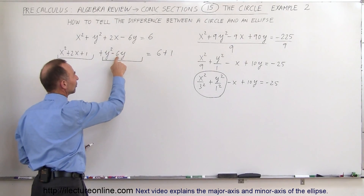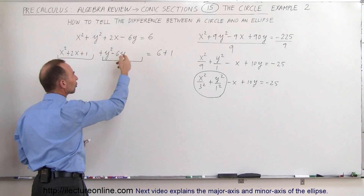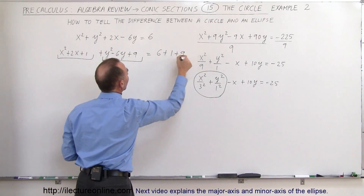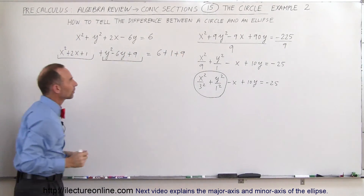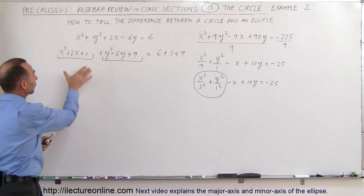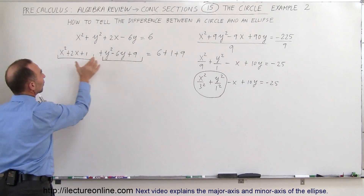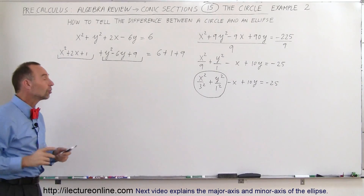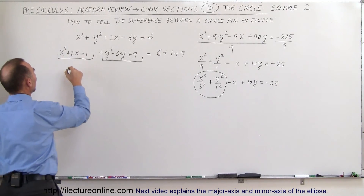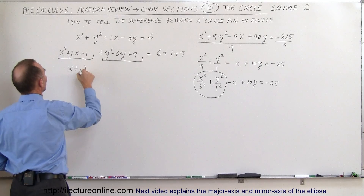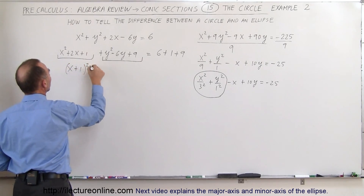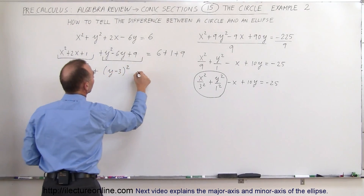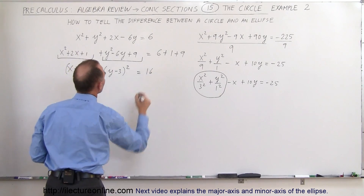Over here we take half this coefficient, which is negative 3, squared to get plus 9, and so we also need to add a plus 9 on the right side of the equation. Now we see that this is a perfect square and this is a perfect square, so we can write this as the square of a binomial. Here we can write this as (x + 1) squared plus (y − 3) squared is equal to 16.